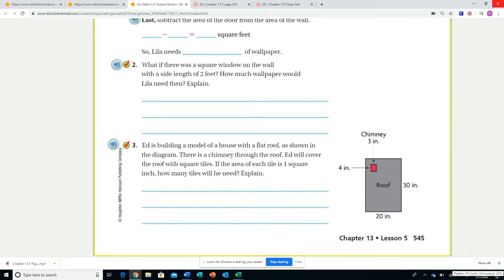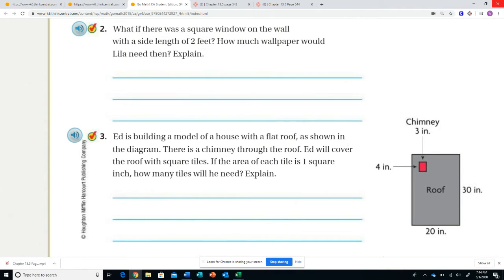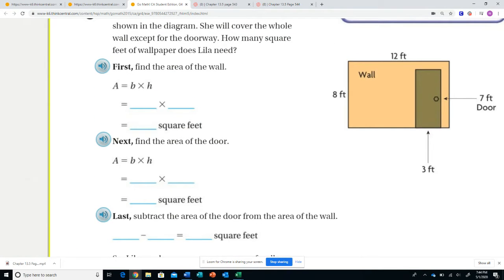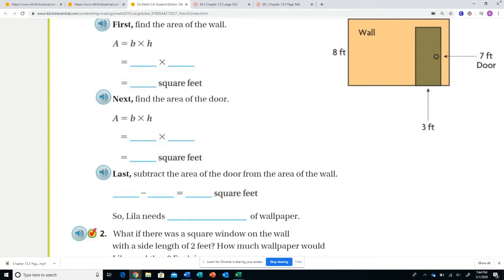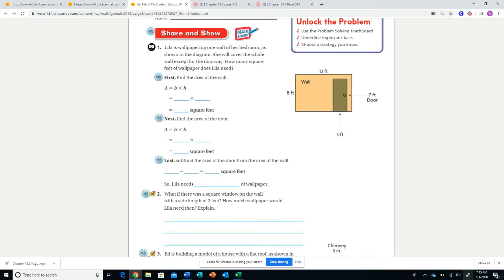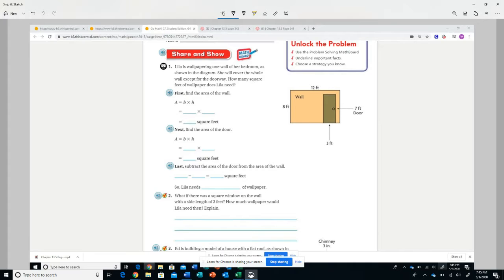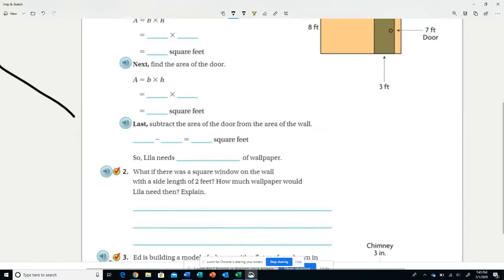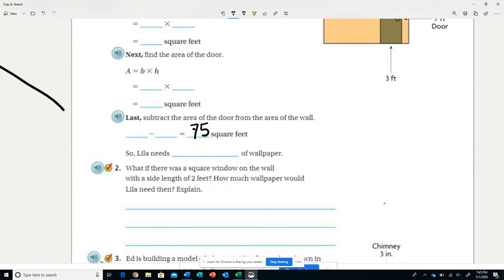Now we're down to question two and three. What if there was a square window on the wall with a side length of 2? How much wallpaper would Lila need then? If you go back to where we were, we're at our answer of 75, our wall was 96 square feet minus our 21 square foot door. So now she's going to put a window in.